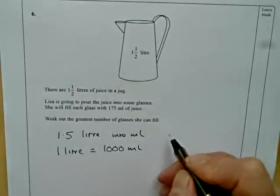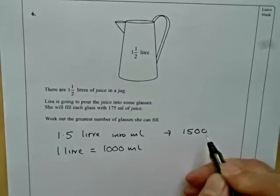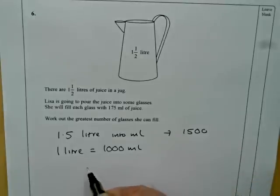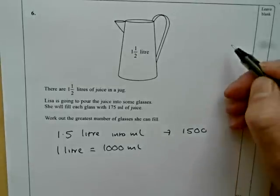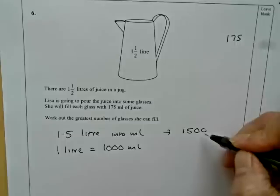So 1.5 then will equal one thousand five hundred. With 175, there's a couple of ways we can go about this. We could just keep adding one-seven-fives until we got close to fifteen-hundred.